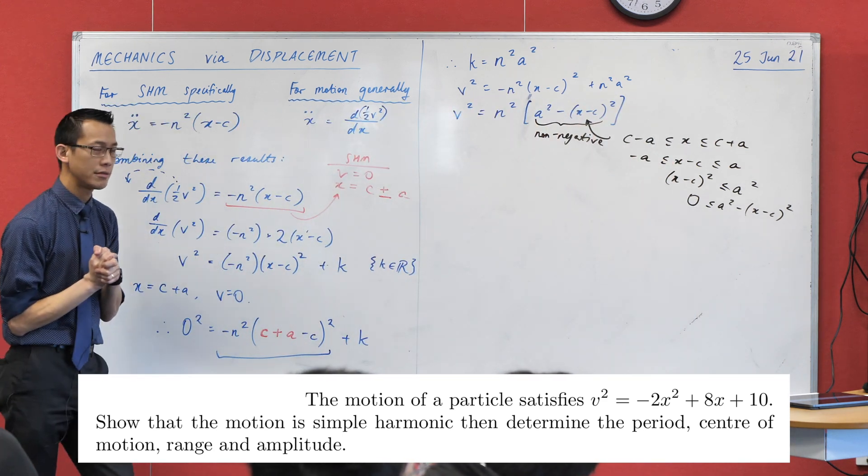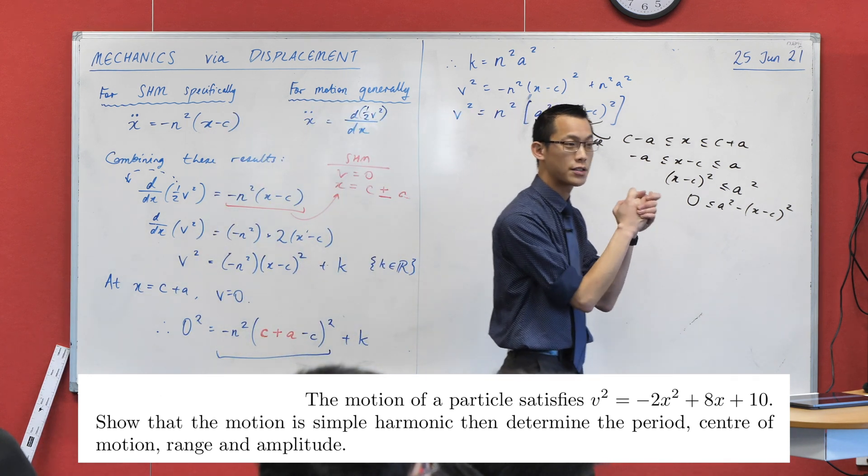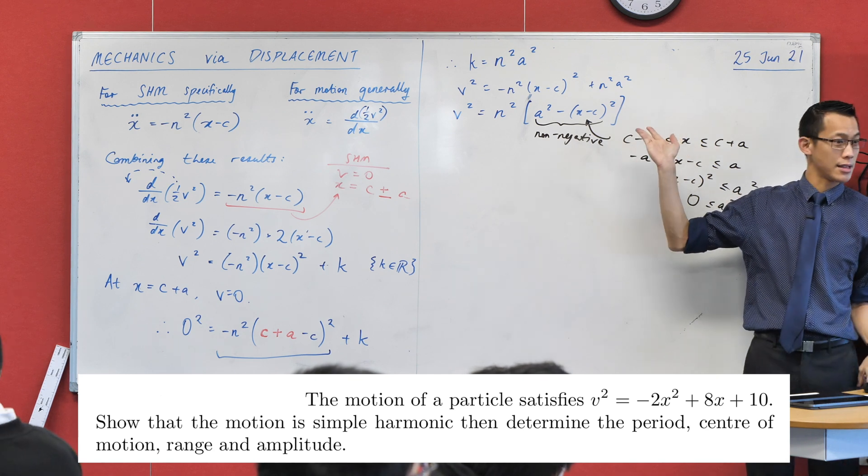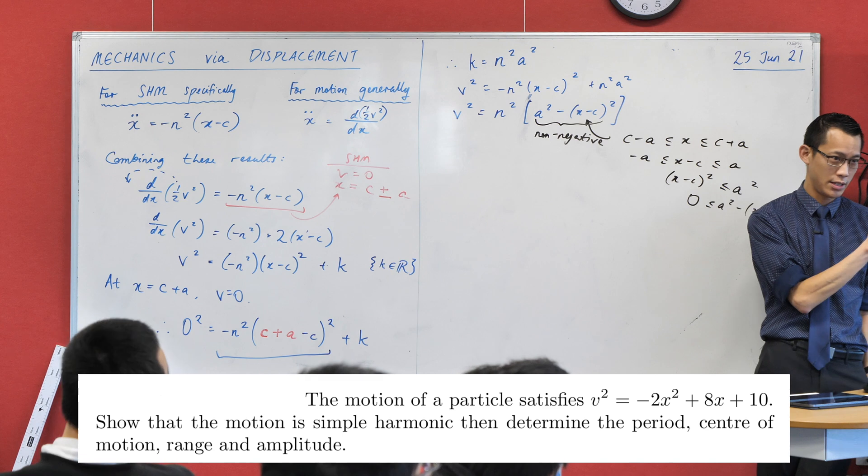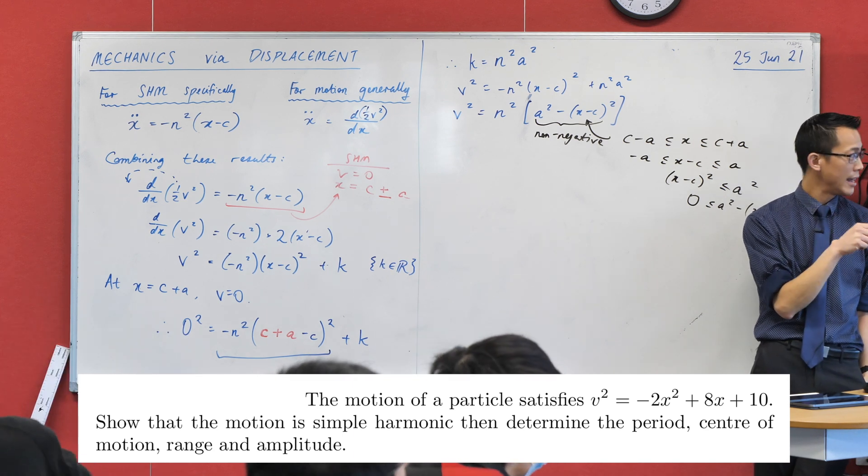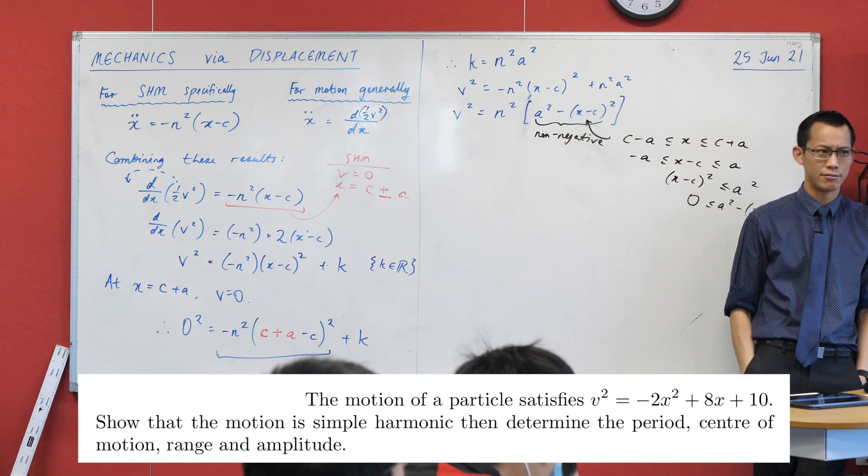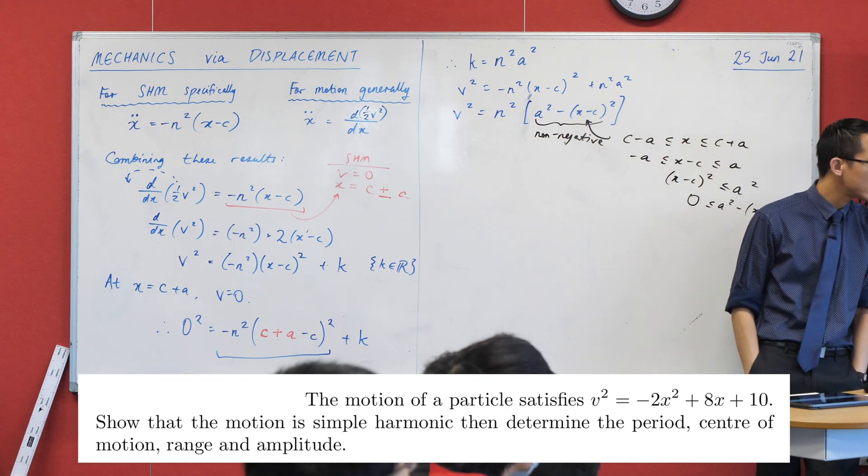You've been given an equation that tells you about the velocity squared of some particular particle in terms of displacement. Now just have a look at this last line that we've written here. What that essentially means is, if you get some expression for velocity squared in terms of displacement, and it's a quadratic, but it's concave down, as it were, you've got a negative leading coefficient. In this case, it's negative 2.